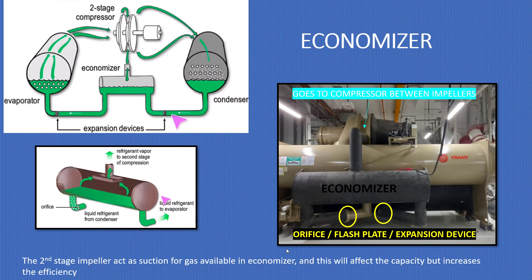The economizer is one of the most important components — it is used to increase the efficiency of the chiller. You can see here on the right-hand side the condenser and on the left-hand side the evaporator. The vapor goes to the compressor. There is an orifice through which liquid refrigerant from the condenser goes into the economizer, then starts to evaporate. Only the vapor goes to the compressor; the liquid comes back to the evaporator for vaporization. The second-stage impeller acts as suction for gas available in the economizer, which affects capacity but increases efficiency.